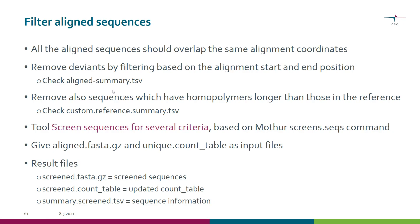At this point you can also remove sequences which have homopolymers longer than those in the reference template for this particular region. In order to check that, you can see the custom reference summary file.